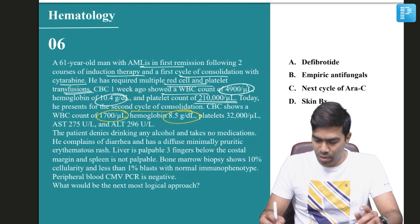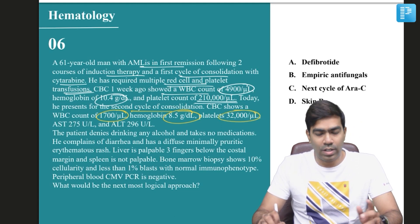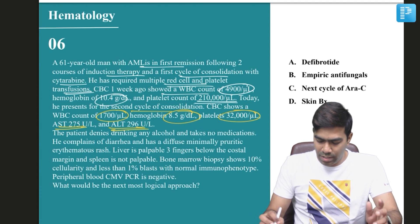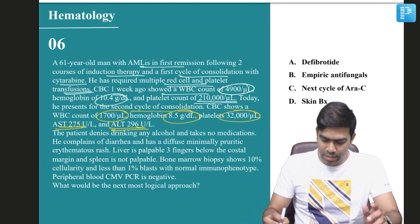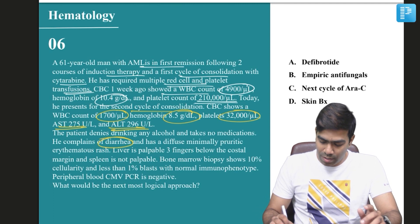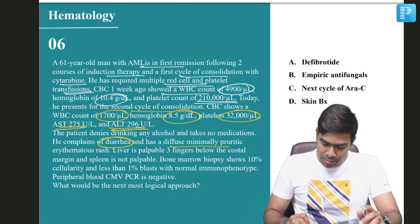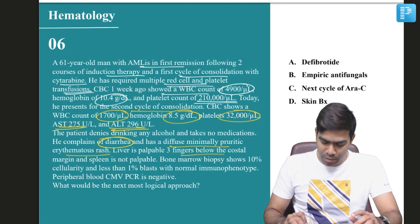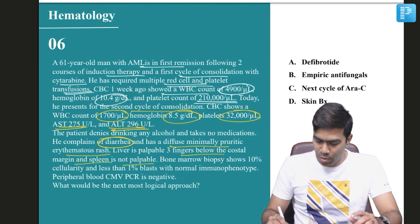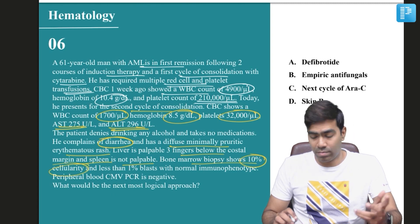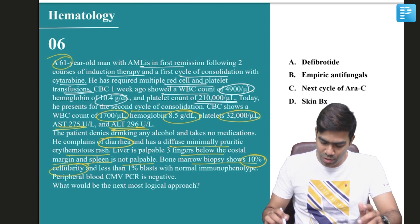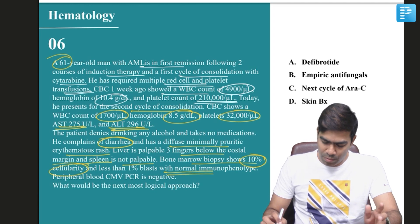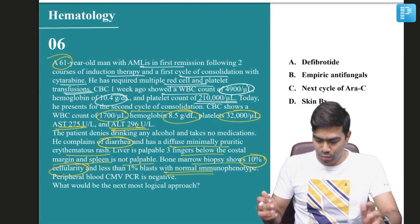Hemoglobin is 8.5, platelet count is only 32,000, AST is elevated, ALT is also elevated. Patient denies drinking any alcohol and takes no medications. He complains of diarrhea and has a diffuse minimally pruritic erythematous rash. Liver is palpable three fingers below the costal margin, spleen is not palpable. Bone marrow biopsy shows 10% cellularity, meaning the marrow cellularity has reduced for the age.